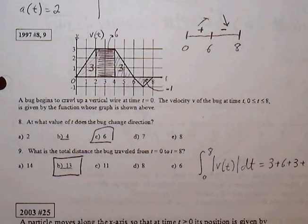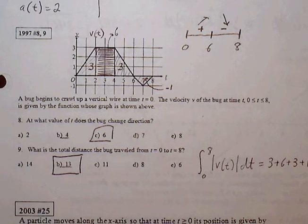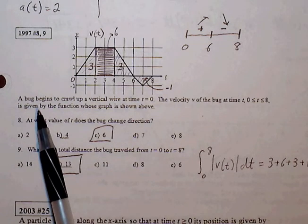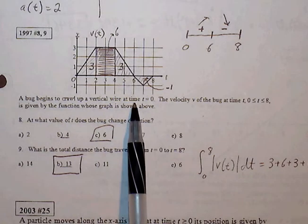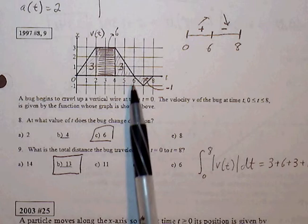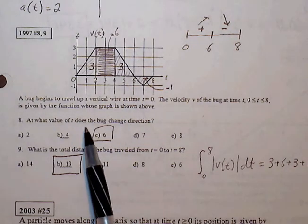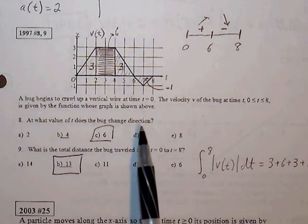The next one here, 1997 number 8 and 9. A bug begins to crawl up a vertical wire at time t equals 0. The velocity is given by the graph shown. At what value of t does the bug change direction?